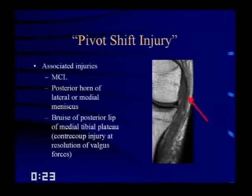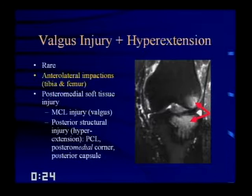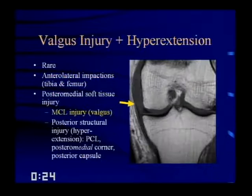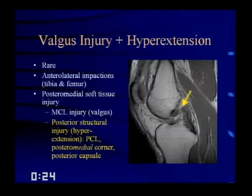Valgus injury with hyperextension is rare, but reinforces the concept: if you have an anterolateral bone bruise in the anterolateral tibia and femur, look for posteromedial soft tissue injury. This can include MCL injury due to valgus forces and posterior structural injury such as a PCL tear due to hyperextension. You can also get posteromedial coronary injuries such as the semimembranosus tendon and posterior capsule.